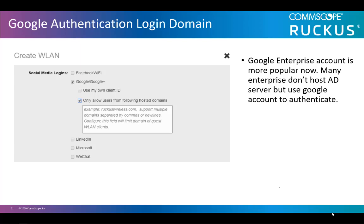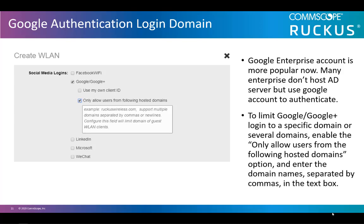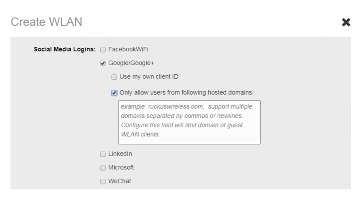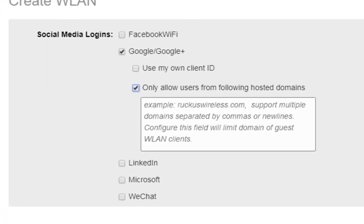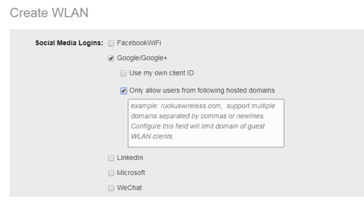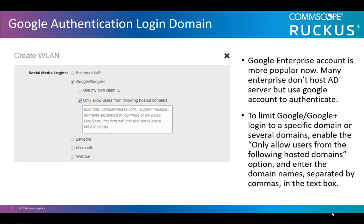Google Enterprise accounts are more popular today. Many enterprises don't host an active directory server but use Google accounts to authenticate. To limit Google or Google Plus login to a specific domain or several domains, you will check the Google or Google Plus box and check the 'only allow users from the following hosted domains' option, then enter the domain names separated by commas in the text box.